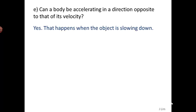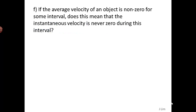That happens when the object is slowing down. Now, if the average velocity of an object is non-zero for some interval, does this mean that the instantaneous velocity is never zero during this interval? No.